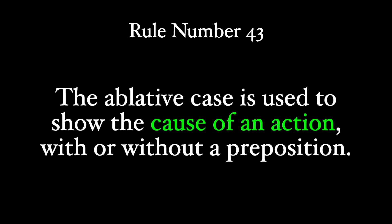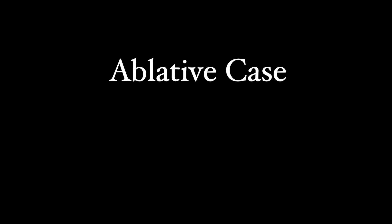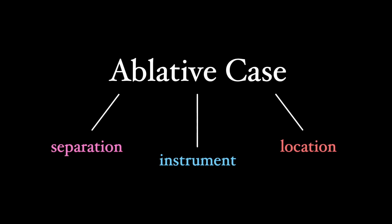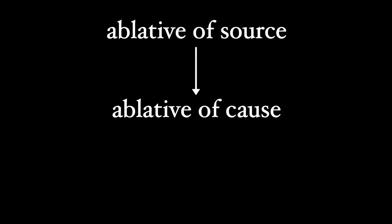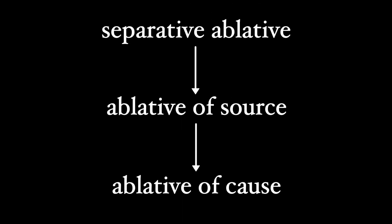Rule number 43. The ablative case is used to show the cause of an action with or without a preposition. The ablative case in Latin is a combination of three different functions that show separation, instrument, and location. We are going to talk about a type of the separative function with the ablative of cause. In fact, this use case originates as an ablative of source, rule number 42, itself a type of separative ablative.